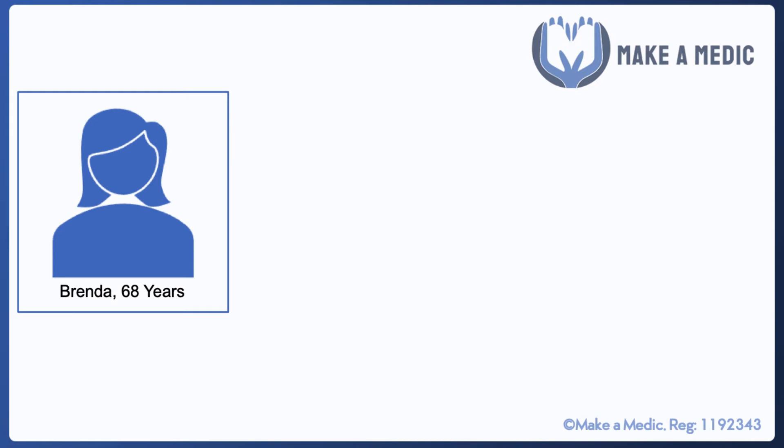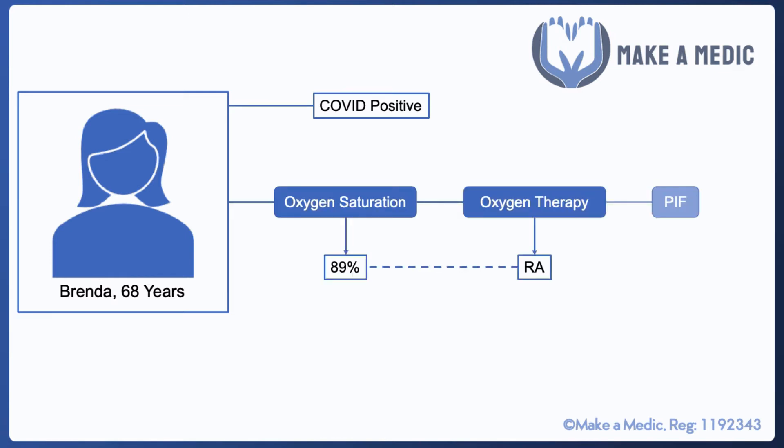I'm going to use a couple of examples to illustrate how oxygen therapy works. Here we have Brenda, who's 68 years old and is COVID positive. On admission, she had an oxygen saturation of 89% on room air and her peak inspiratory flow rate was 40 liters per minute, suggesting that she's trying quite hard to breathe.